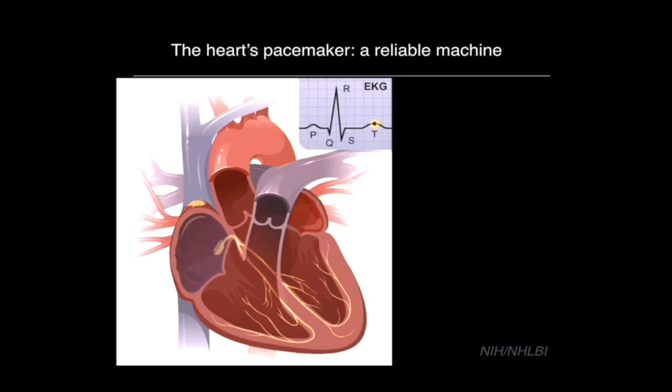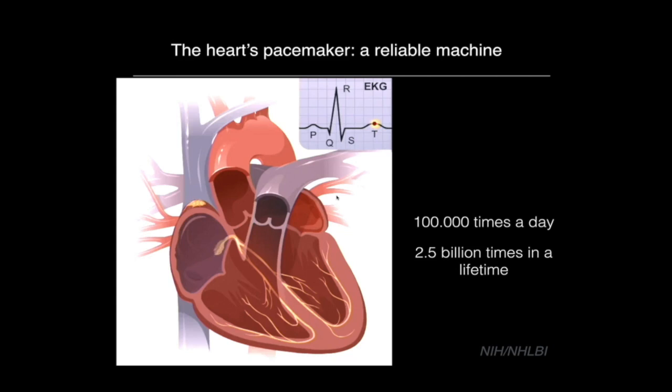The cardiac pacemaker is a specialized and small tissue of the heart that has the ability to fire spontaneously action potentials and generate the electrical spark that initiates heart contraction. The human heart beats around 100,000 times a day and near 2.5 billion times in an average lifetime. Each single heartbeat originates on top of the right atrium in a small region called the sinoatrial node — the natural pacemaker of the heart. This cycle goes over and over from the moment the heart forms in the embryo until the moment we die.